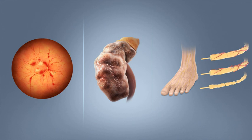The WHO estimates that diabetes mellitus resulted in 1.5 million deaths in 2012, making it the eighth leading cause of death. However another 2.2 million deaths worldwide were attributable to high blood glucose and the increased risks of cardiovascular disease and other associated complications such as kidney failure, which often lead to premature death. In 2017, the International Diabetes Federation estimated that diabetes resulted in 4.0 million deaths worldwide. Diabetes mellitus occurs throughout the world but is more common — especially type 2 — in more developed countries. The greatest increase in rates has been seen in low- and middle-income countries, where more than 80% of diabetic deaths occur.